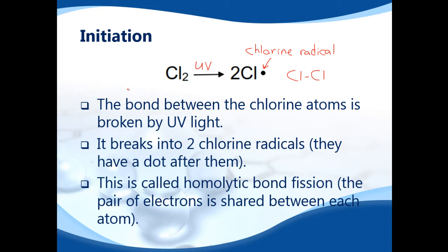And that's initiation. If you ever have to write an equation for initiation, this is how you do it. The halogen goes on the left, the arrow with the UV above it, and then you have the two Cl radicals, chlorine radicals.